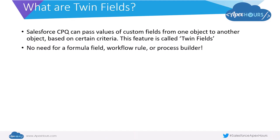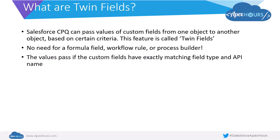There is no need for a formula field, a workflow, a process builder, or any other form of automation. Salesforce CPQ has an inbuilt feature where certain values can be passed between one object to another automatically. The most important thing to note is that the values pass if the custom fields have exactly matching field types and API names.